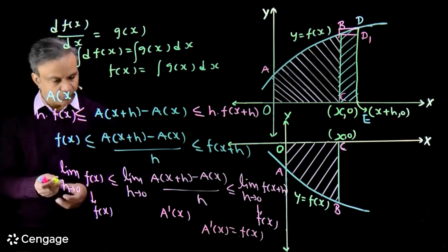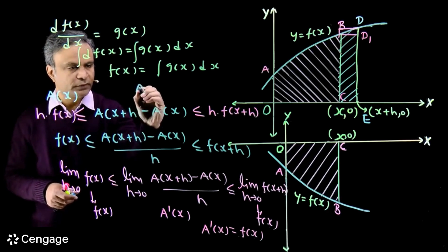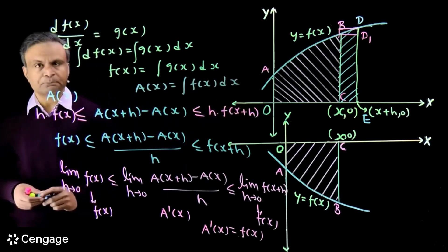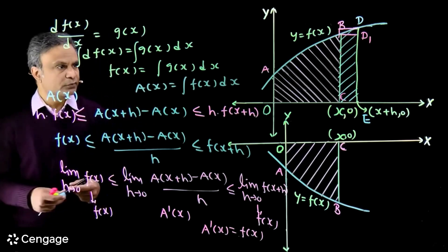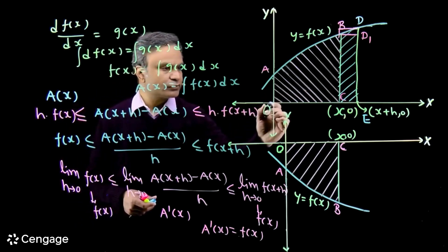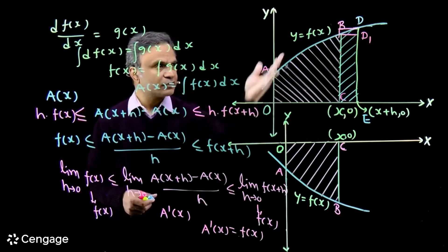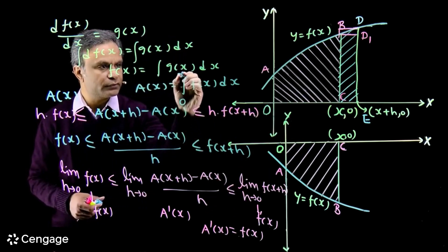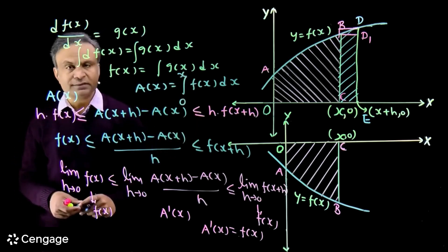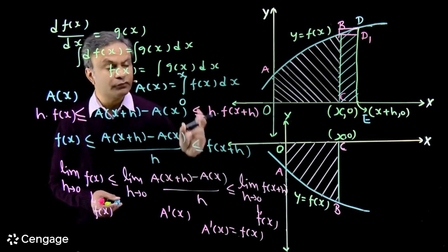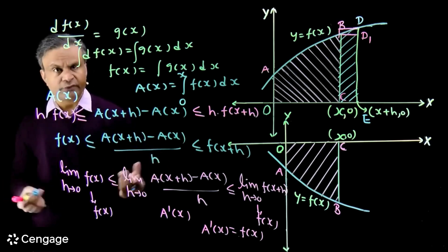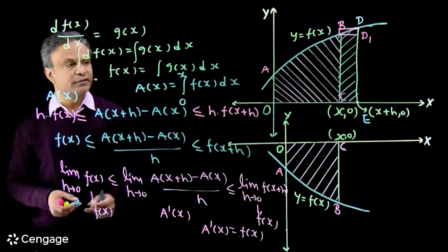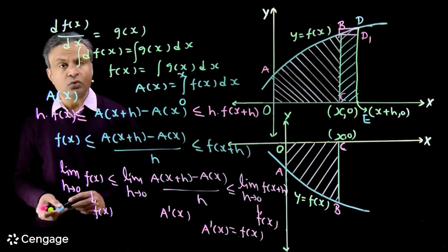Integrating both sides, we get A(x) = ∫f(x) dx. So the integration of f(x) is the area function. This area is for x ranging from 0 to x, so we put limits 0 to x. The area under the curve y = f(x) is the definite integral of f(x) with limits 0 to x. This is called the definite integration of f(x) and it is the area function, which depends on the value of x.